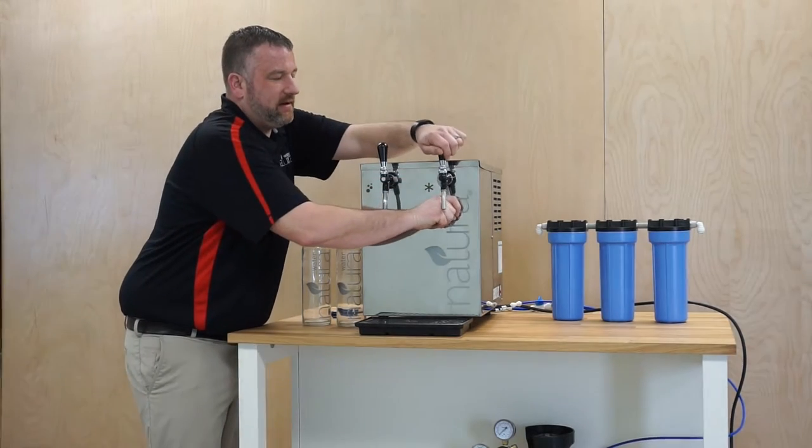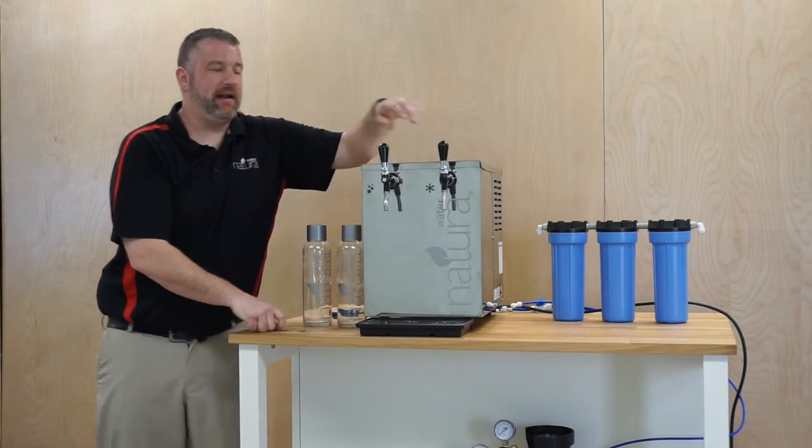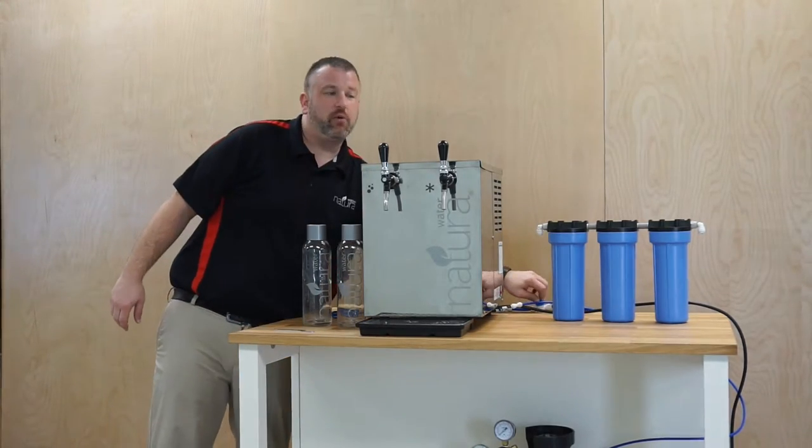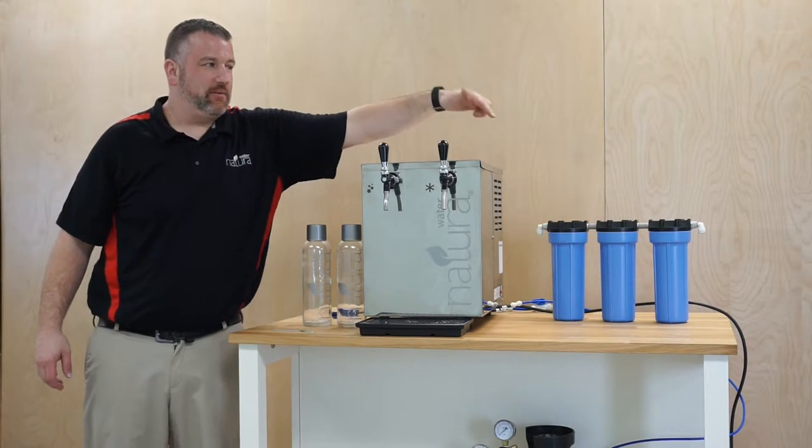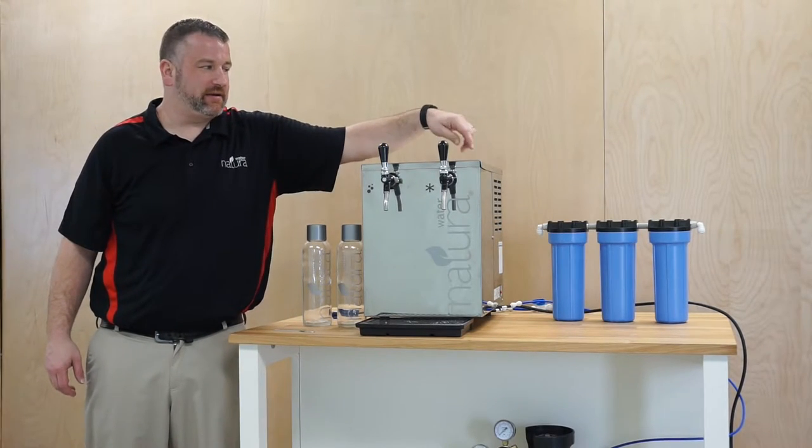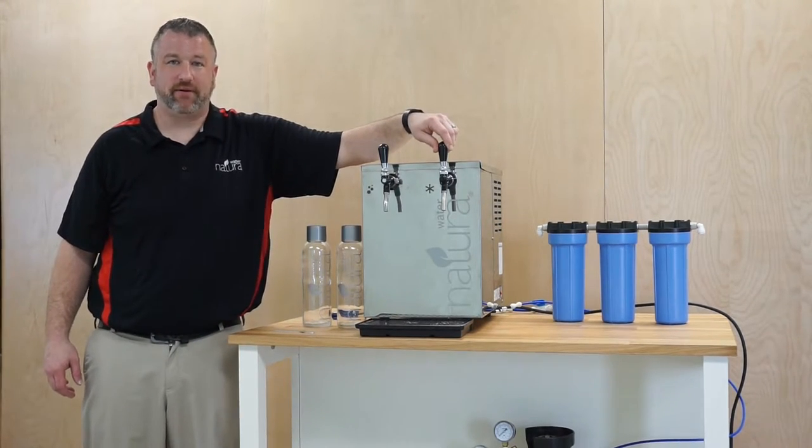Once tightened and good, you can go ahead and turn on your water supply. Once you turn the water on, this is when you can check your main connections for any leaks, and you can also check the taps for any leaks.